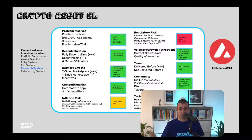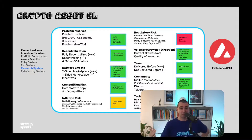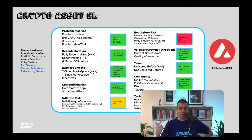Point seven: team. Has this team delivered something in the past? Are they able to execute? They don't need to have built exactly this type of project before, but they need to demonstrate they can deliver, change direction, and get back up when things go wrong. Execution track record matters.